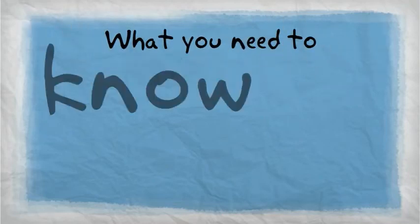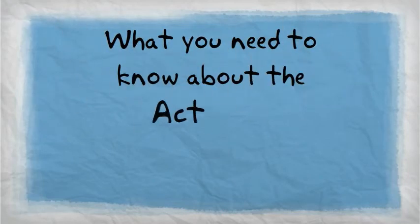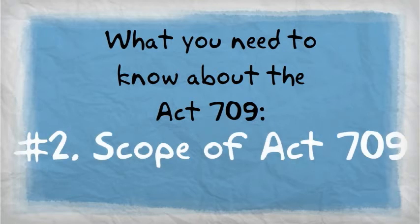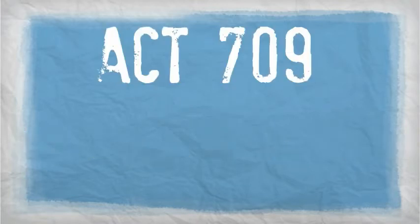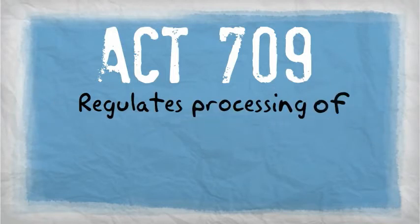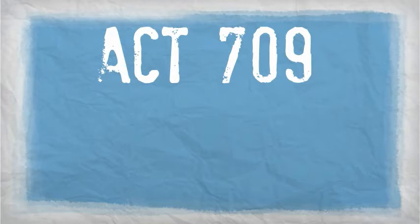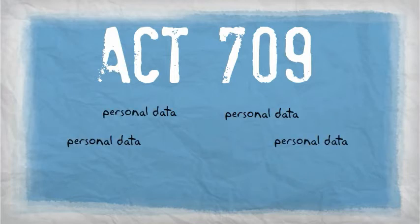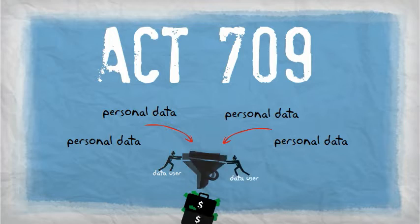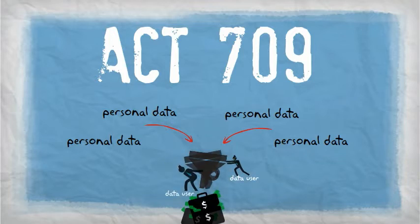What you need to know about Act 709. The scope of Act 709: it regulates the processing of personal data in commercial transactions. Act 709 applies to any person who processes personal data for commercial transactions.